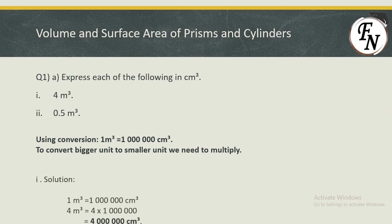For part one, 4 meter cube needs to be converted to centimeter cube. Since 1 meter cube is 1,000,000 centimeter cube, 4 meter cube would be 4 multiplied by 1,000,000. We multiply because we are converting from a bigger unit to a smaller unit. So 4 multiplied by the conversion unit gives us 4,000,000 centimeter cube, which is 4 million cm³.